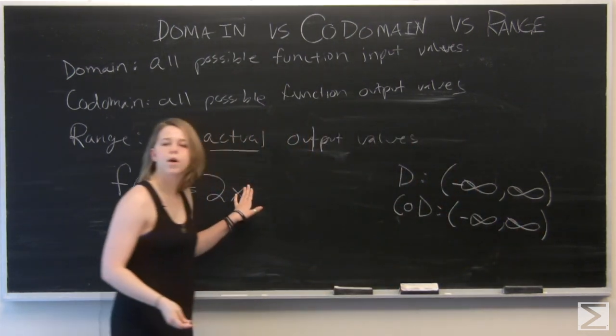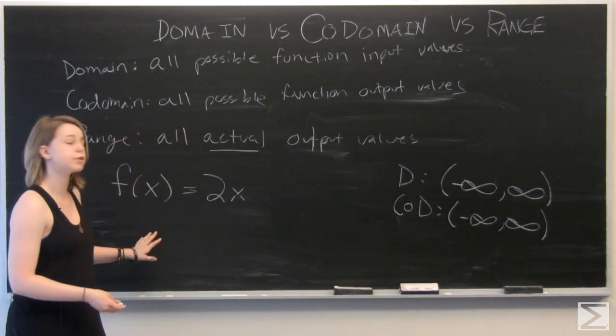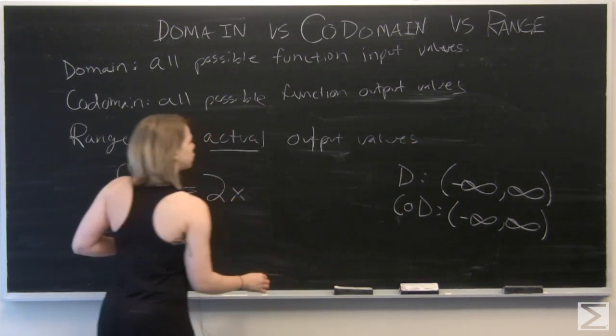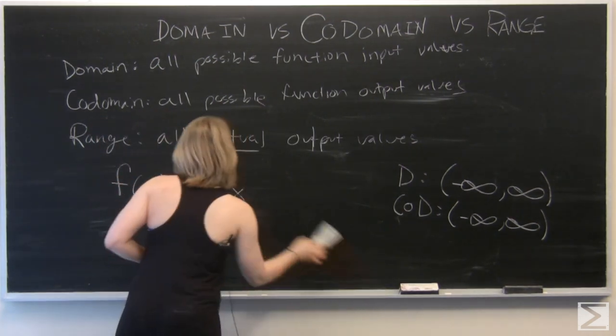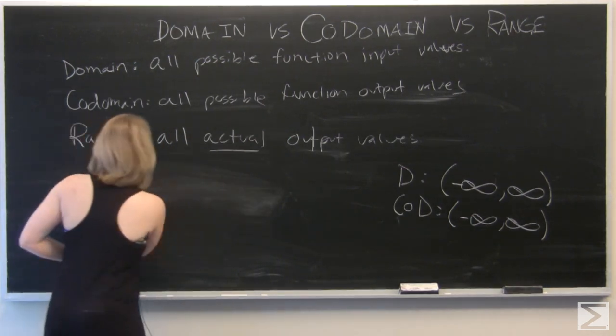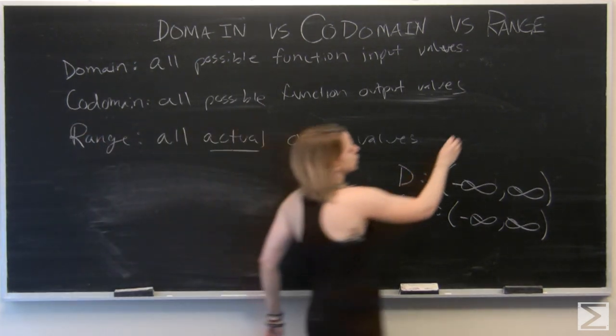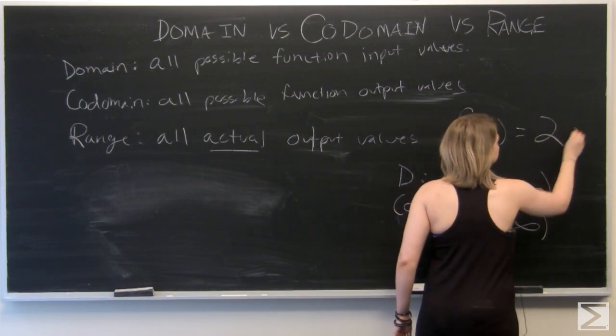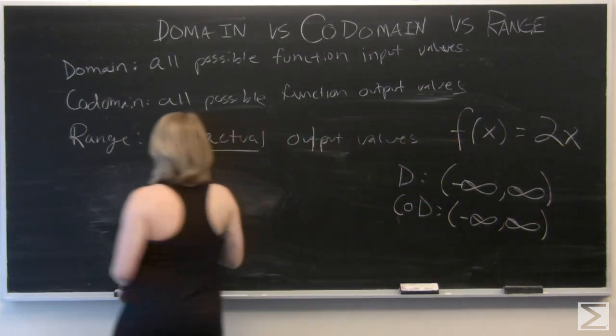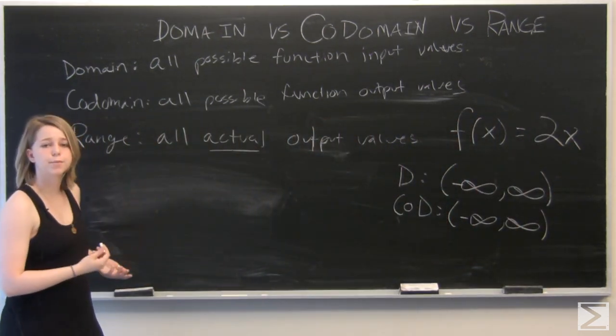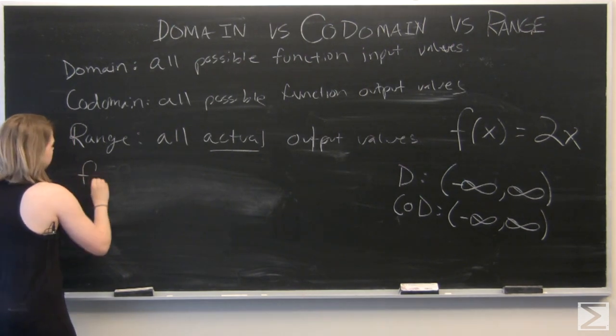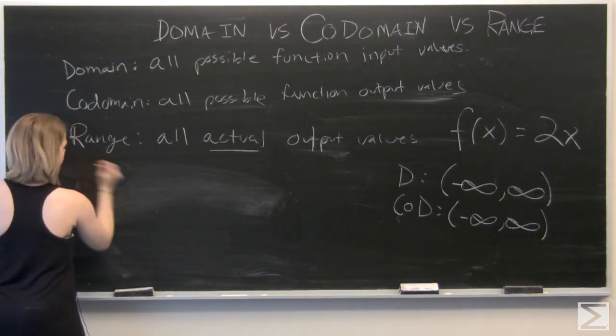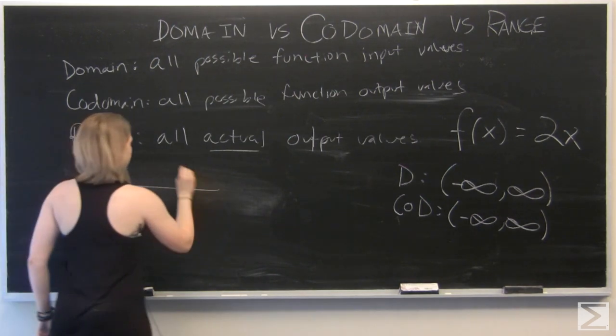But let's find out what our range is and whether that differs from our codomain. So let's do a chart. I'll rewrite our function over here. So let's do a chart of our input and output. We've got our inputs first and our output.